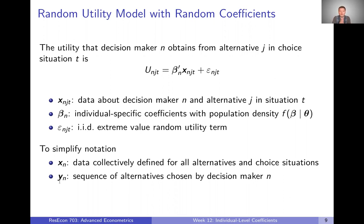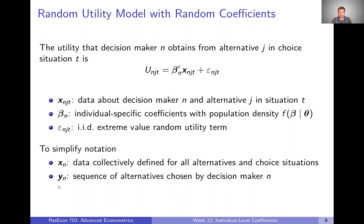So let's call that full sequence of alternatives Y sub N. This is going to be a sequence — however many choice settings, capital T — we're going to have capital T different choices being made, and we collect all of those into one vector that we call bold Y to indicate that it's a vector of choices.